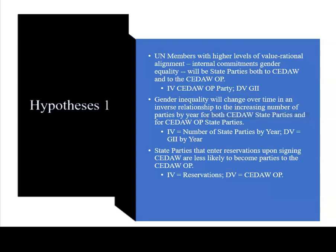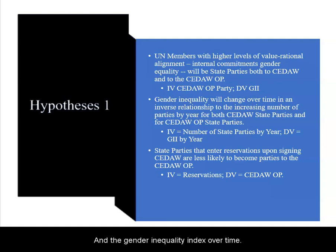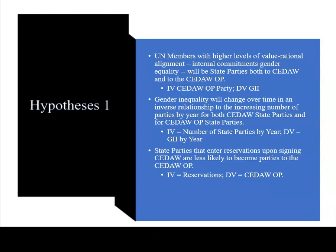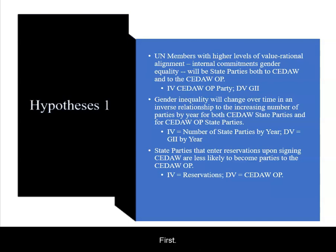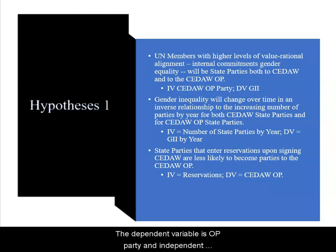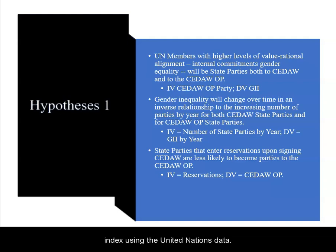My newer research, to which many of you are invited to join, concerns largely the CEDAW OP and the gender inequality index over time, although I have also used other measures of women's equality as these change in relationship to nation states becoming a party to the CEDAW OP. First, members with higher levels of value rational alignment — that is, internal commitments to gender equality — will be more likely to be state parties to CEDAW and to the CEDAW OP. The independent variable is OP party and the dependent variable is gender inequality, or the gender inequality index, using United Nations data.